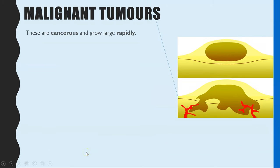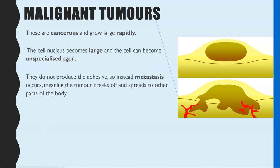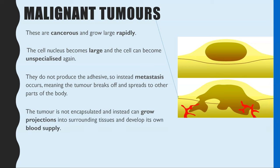In contrast, malignant tumors are the cancerous tumors. They grow much quicker, become large, and the cells have the ability to become unspecialized again. The key properties are that they do not produce the sticky adhesion molecule and they are not contained within a membrane capsule. For that reason, they can metastasize — meaning some tumor cells can break off, be transported in the bloodstream, become lodged in a new place in the body, and result in secondary tumors developing.